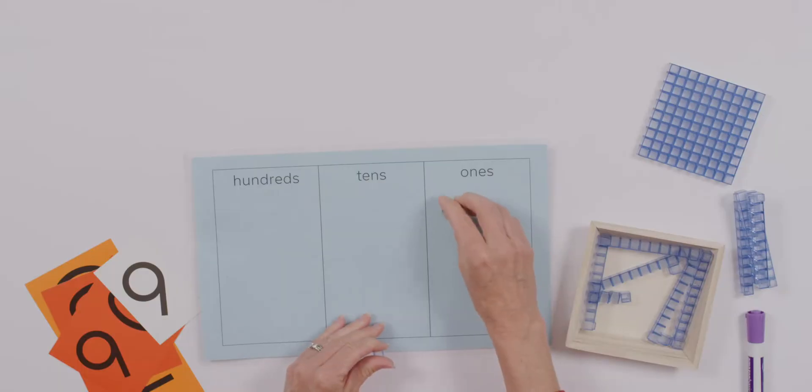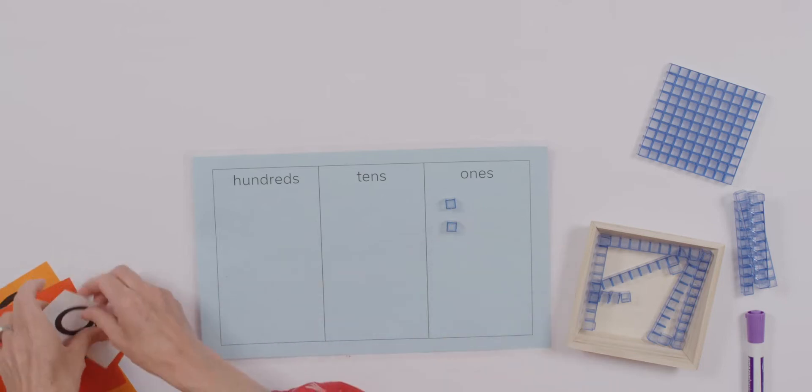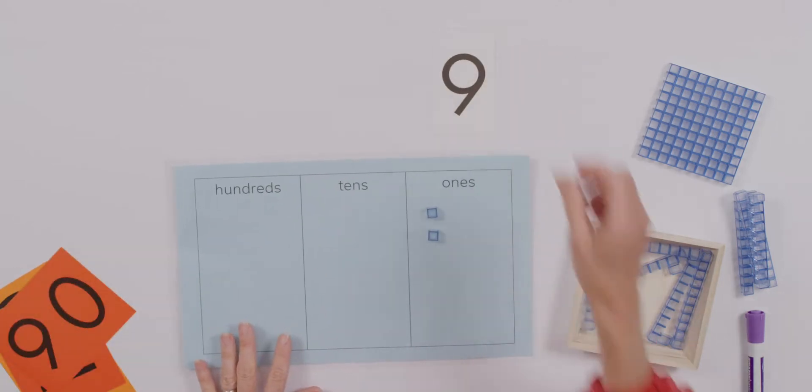I hope that you've got some base 10 blocks with you. I've got mine here with me and I'm going to start off with my ones. I just call these little cubes units - it's just one little unit. What I'd like you to do is put nine of them out on your place value mat.